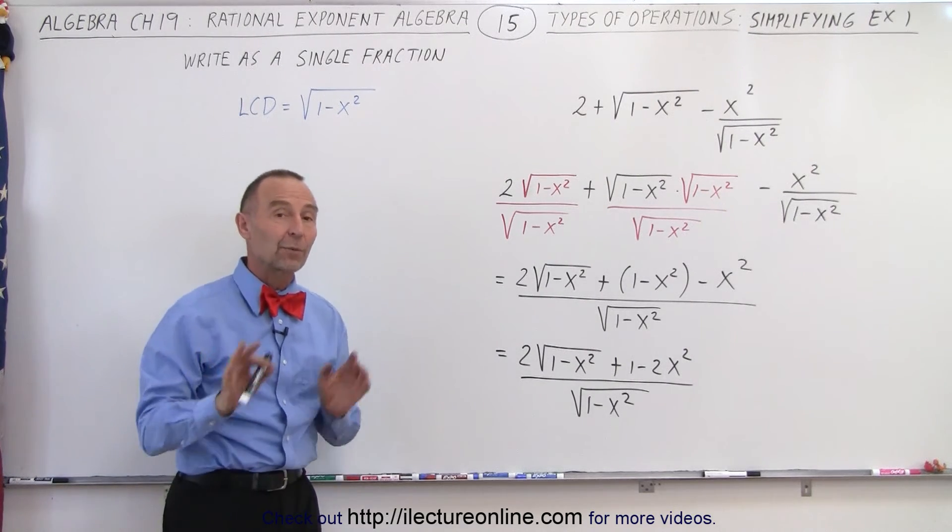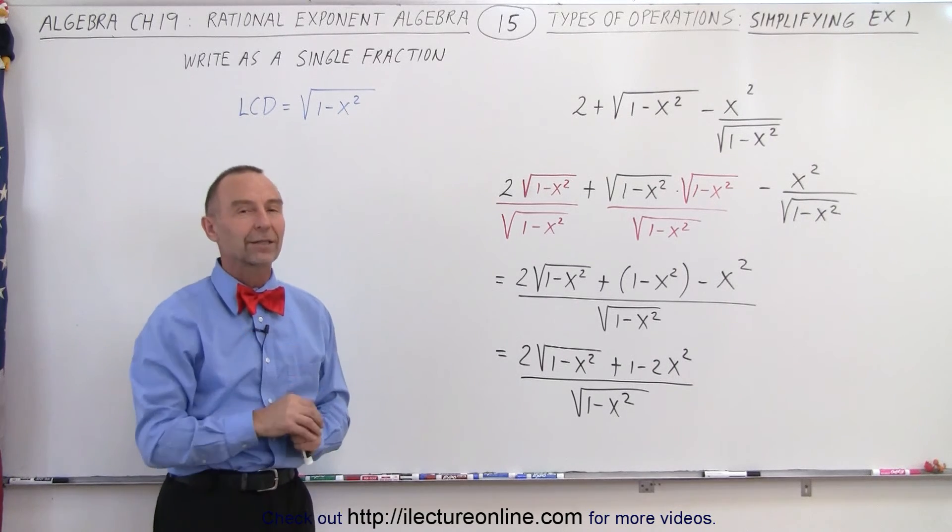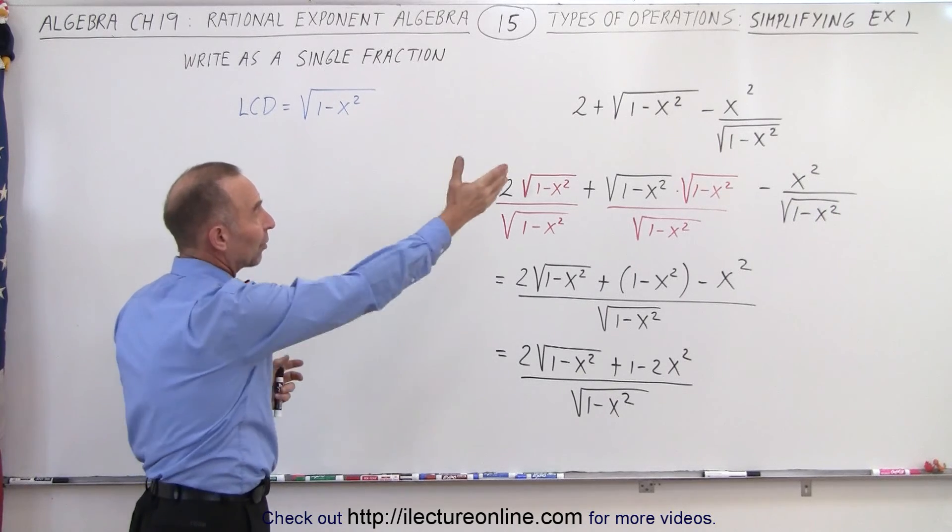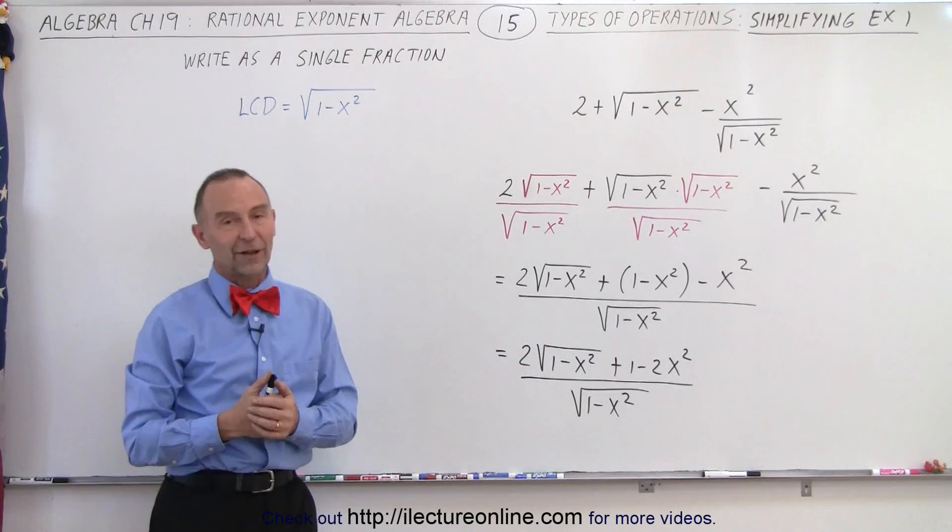Right now we'll just leave it like that, and then later on we'll show you how to rationalize the denominator so we don't end up with a radical in the denominator. But at this point, since that was our common denominator, we'll just leave it like that, and that's the final result.